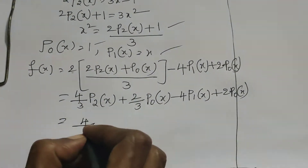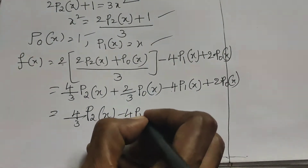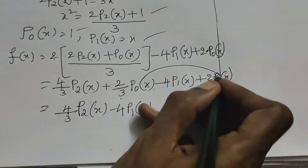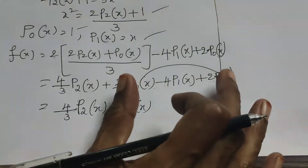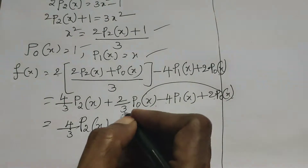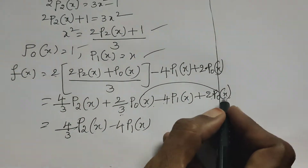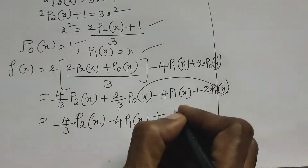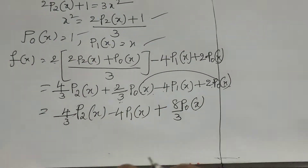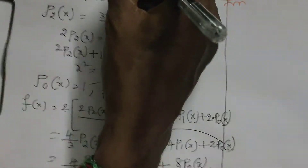Collecting terms: (4/3)·P2(x) minus 4·P1(x) plus (2/3)·P0(x) + 2·P0(x). Taking LCM of the P0 terms — LCM is 3 — gives (2/3 + 6/3)·P0(x) = (8/3)·P0(x). So the final answer is f(x) = (4/3)·P2(x) minus 4·P1(x) + (8/3)·P0(x).